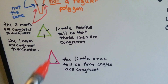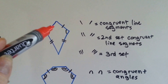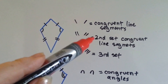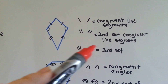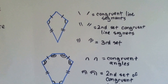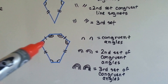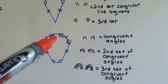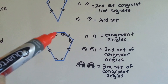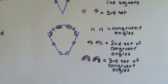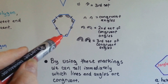This angle is the same measure as this one, but this one doesn't have one because it's not the same measure. When you see one little line, that means they're congruent line segments. When you see two little lines, that means that's the second set of congruent line segments. Here's the first set of congruent line segments, and here's the second set. If you see three, that means it's the third set of congruent line segments, and there might even be four on some polygons. When you see one little arc, that means these two angles are congruent to each other. When you see two little arcs, that means these are the second set that are congruent to each other. And if you see three, that's the third set of angles that are congruent. By using these markings, we can tell immediately which lines and angles are congruent — we know immediately that these two are congruent, but not these two, because this has one arc and that has two.